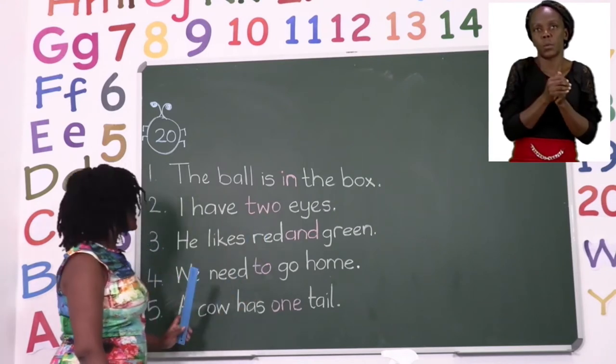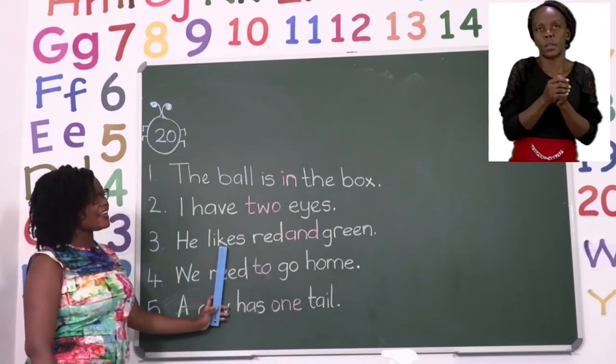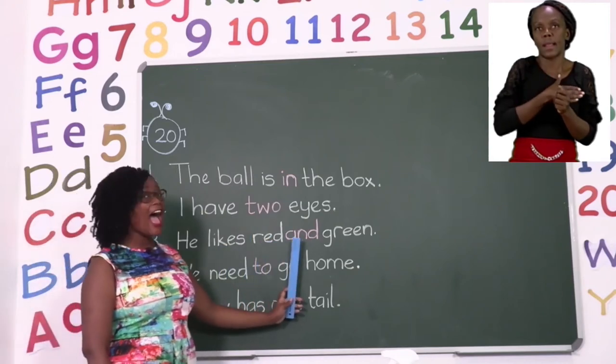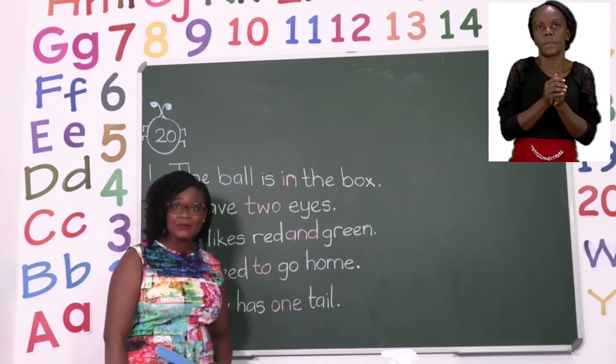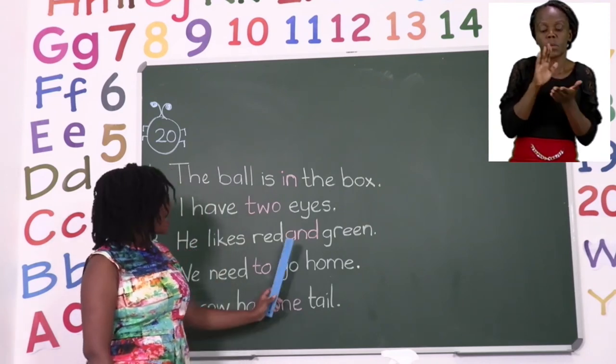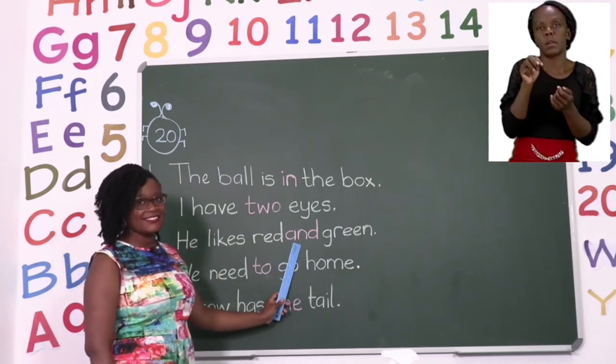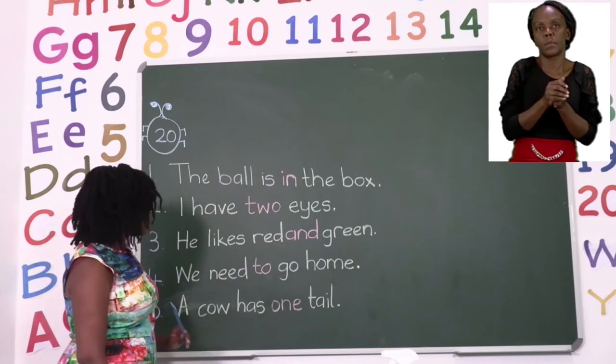The next one says, he likes red and green. Our sight word in this sentence is the word and. And let's take a look at the next one.